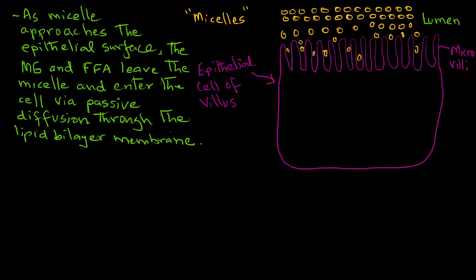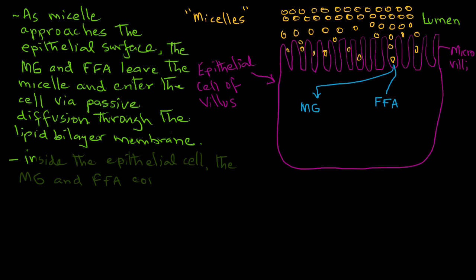This activity of the bile salts in creating micelles to allow the diffusion of free fatty acids and monoglycerides into the epithelial cells continues throughout the three segments of the small intestine: duodenum, jejunum, and ileum.